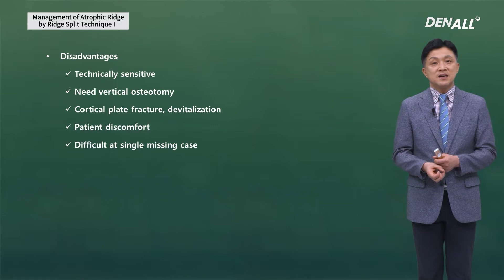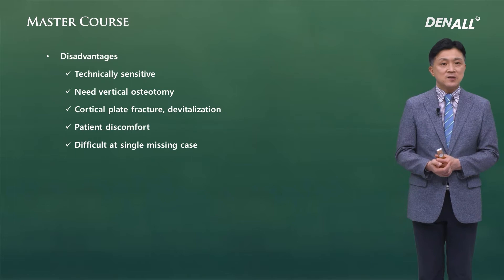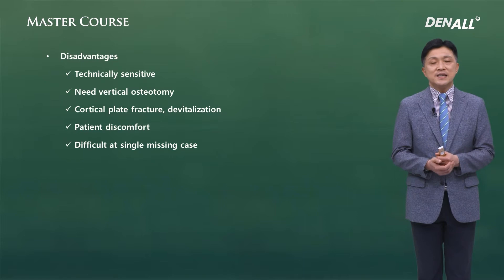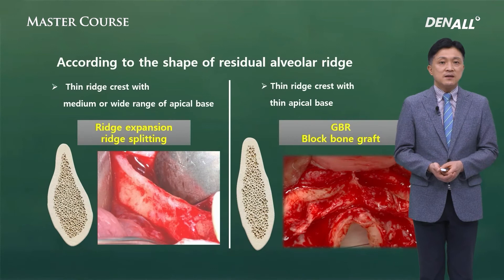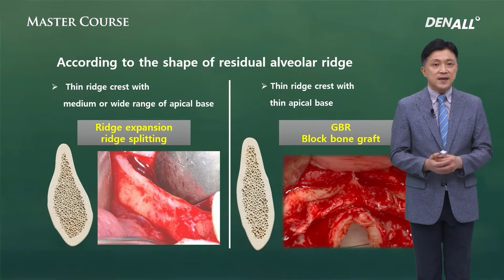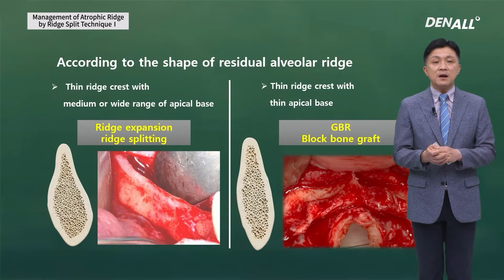Because the surgical site widens and additional incisions are made on the bone, the patient feels significant discomfort. This can be very difficult in single missing cases. Depending on the shape of the residual alveolar ridge, you can look at the indications.